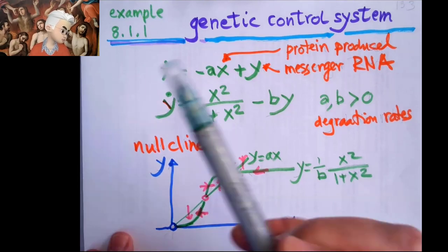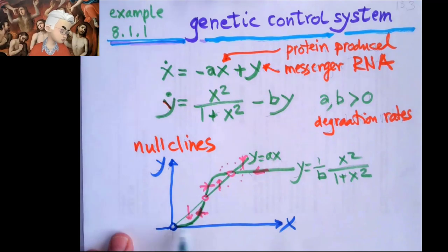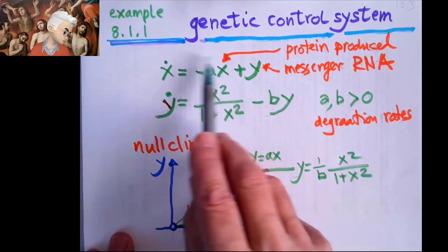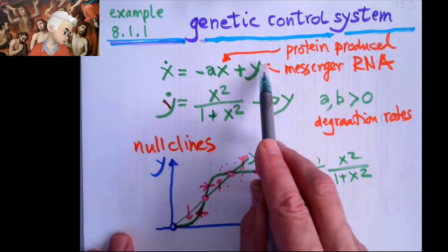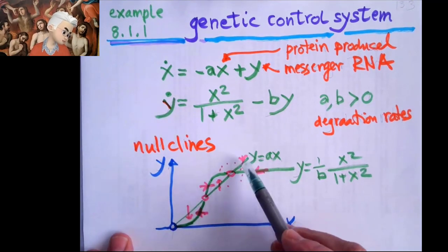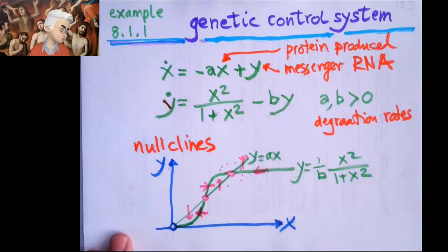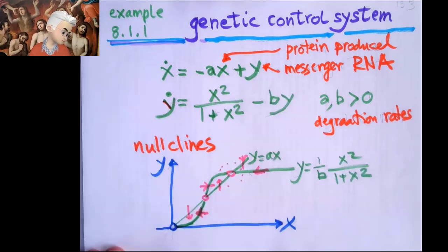So the first null clines is, if I don't want to have any velocity horizontally, I just look at velocity vertically, then x has to be y over a. Or y is ax, obviously. So just a straight line, that one is totally trivial, the first null clines. It's a linear equation.